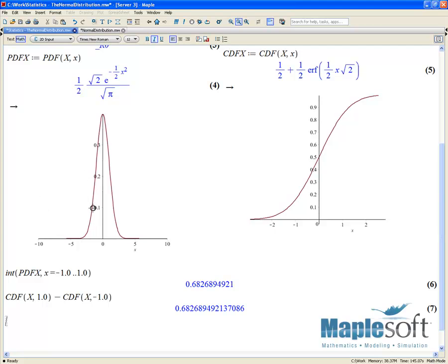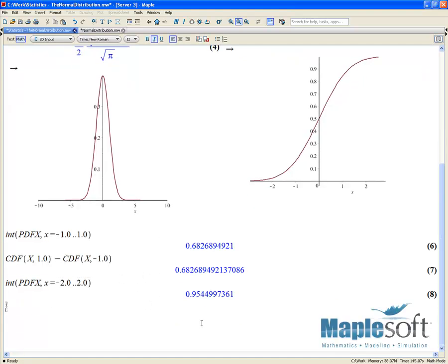So following up with the 95, if we wanted to find all the values within two standard deviations of the mean, we could again just do int of PDF of X from X minus 2 to plus 2. So we get the value of 95.4.